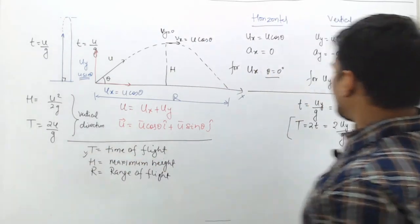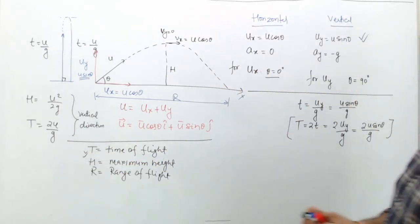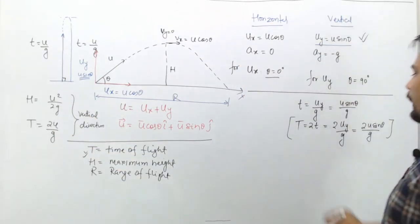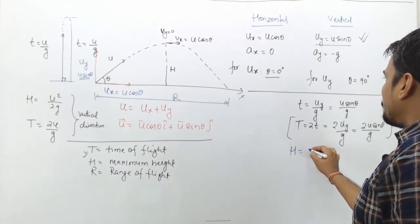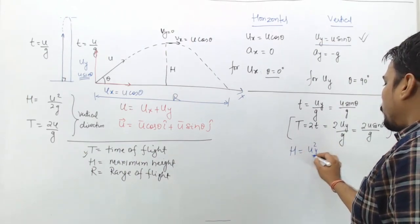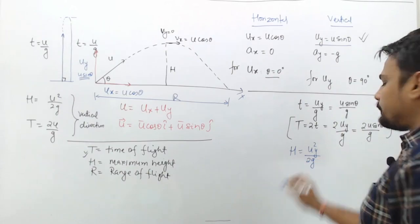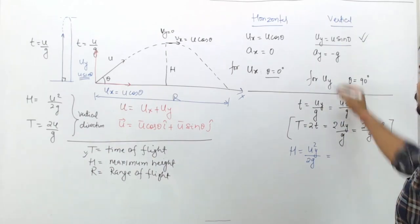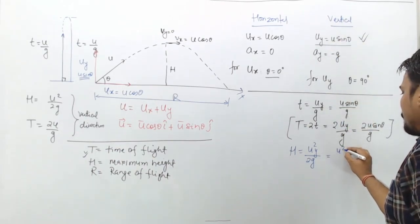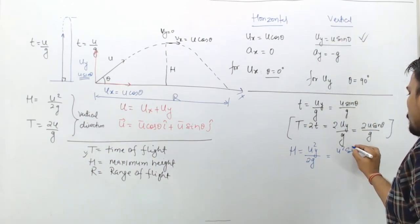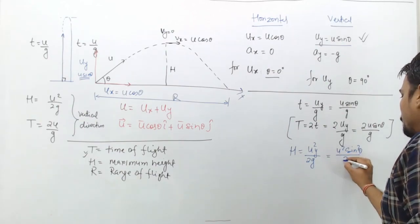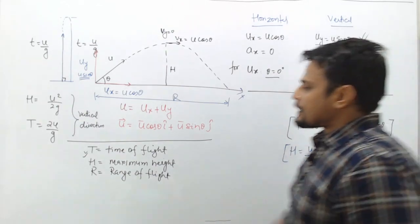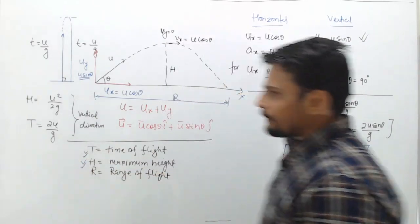For the maximum height, we use u²/2g from vertical motion, replacing u with u_y. So the maximum height H = u_y²/2g = u²·sin²(θ)/2g. That's the second parameter.